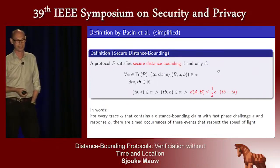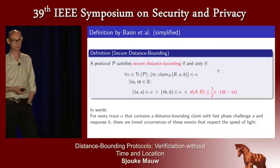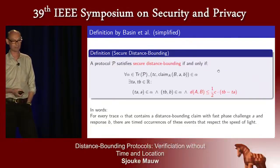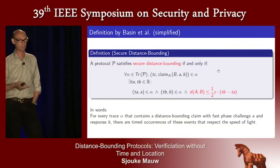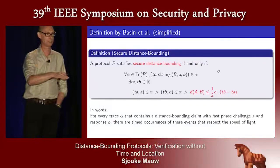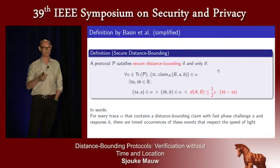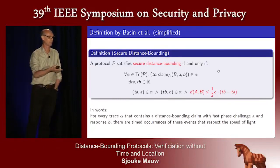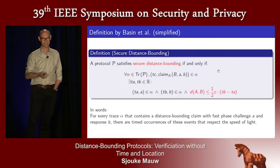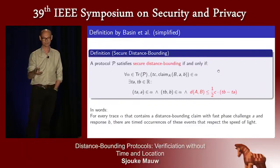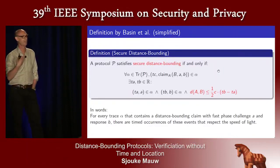In the Basin et al. model, a protocol P satisfies secure distance bounding if for every trace generated by the protocol containing a claim event — a successful execution by the reader — there exist time points t_a and t_b for events a and b such that the distance between agents A and B satisfies the distance regulation. They implemented this in Isabelle/HOL and, with some effort, were able to verify protocols.